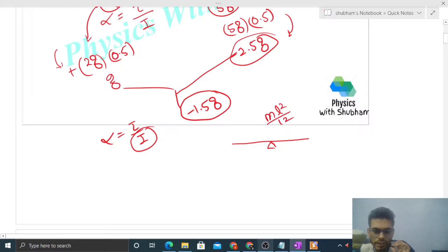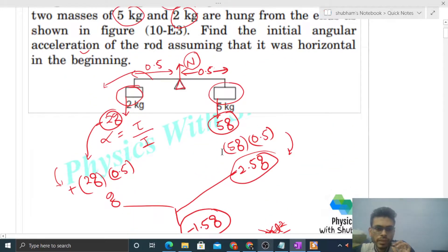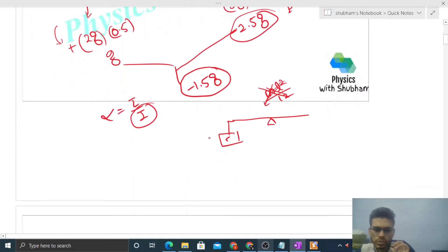About the center, the rod has negligible mass so the moment of inertia will be negligible. Now here we have the 5 kg block and the 2 kg block. This moment of inertia is this mass into its perpendicular distance, that is 0.5 squared.